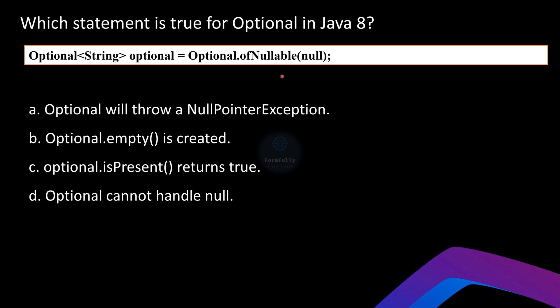In this case since we are passing null, the optional variable will hold an empty optional. An empty optional means the container does not hold any value — it's a safe wrapper around null that won't throw a NullPointerException. You can safely perform checks to see if a value is present. Choice A — 'Optional will throw a NullPointerException' — is incorrect. `ofNullable` does not throw a NullPointerException even if the value is null; it creates an empty Optional. The only time Optional throws a NullPointerException is when using `Optional.of` with a null value.